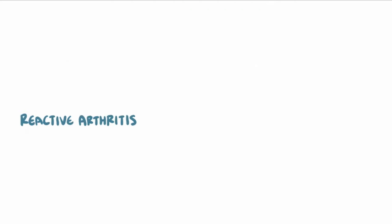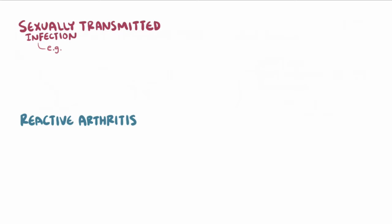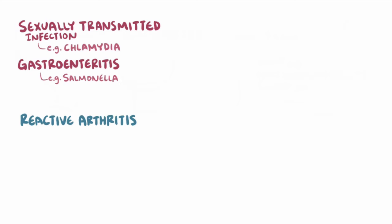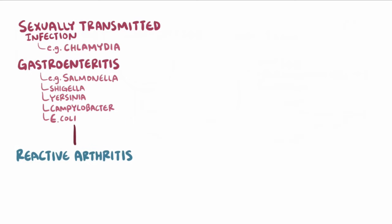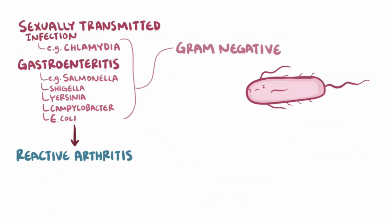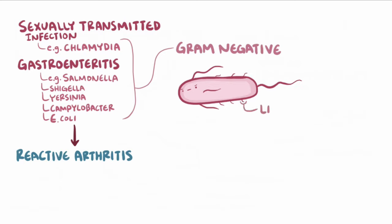Reactive arthritis can develop after a sexually transmitted infection, like chlamydia, or after gastroenteritis caused by bacteria like Salmonella, Shigella, Yersinia, Campylobacter, and E. coli. These bacteria are all gram-negative, so they have molecules on their outer surface called lipopolysaccharides, sometimes shortened to LPS.